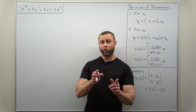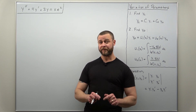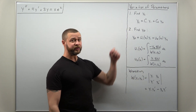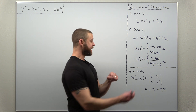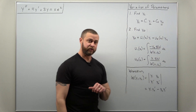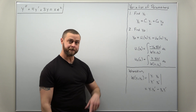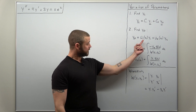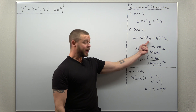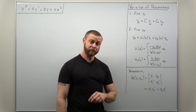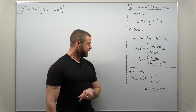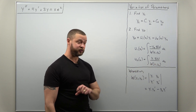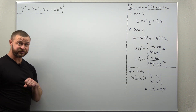Greetings, fellow mathematicians. We're going to take a look at the first problem that we'll solve using the method of variation of parameters. Step one is always to find your complementary solution, from which we get y1 and y2 to apply the variation of parameters formulas. The particular solution has the form u1 times y1 plus u2 times y2, and we have simple formulas for u1 and u2 in terms of y1, y2, the Wronskian, and the non-zero right-hand side g of x.